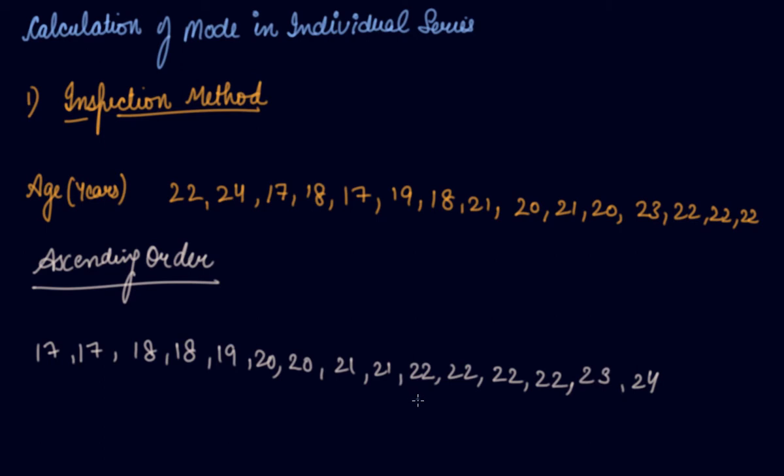Out of 15 students, there are 4 students who have age 22. So, 22 is occurring highest. 22 has the highest frequency in the series, it is occurring most frequently. So, your modal value is 22. This is how you calculate modal value in individual series using inspection method.